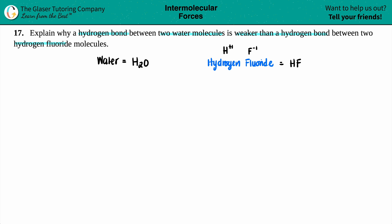A hydrogen bond is not an actual distinct covalent bond — it is one of your intermolecular forces. It's not really an actual single, double, or triple bond. It's just an interaction, just an intermolecular force. A hydrogen bond only exists when you have OH bonds, NH bonds, or FH bonds.